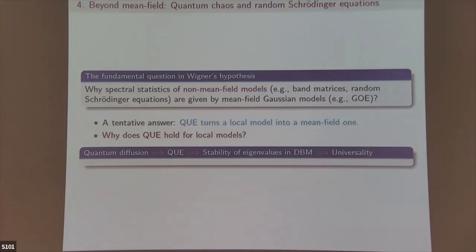Why do random Schrödinger equations have the same eigenvector statistics as GOE? I think if you have QE — quantum ergodicity — the eigenvectors become delocalized, so the local model becomes comparable to mean field. [Audience: what do you mean by mean field?] If anyone interacts with everyone else it's called mean field — the complete graph is the perfect example. Mean field was once considered a trivial, solvable model precisely because everyone interacts with everyone else.